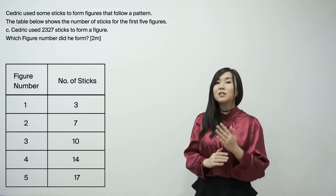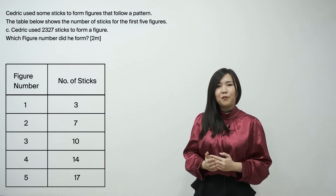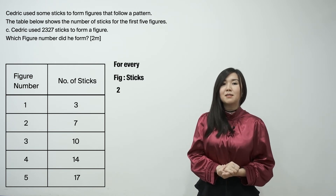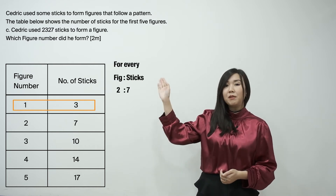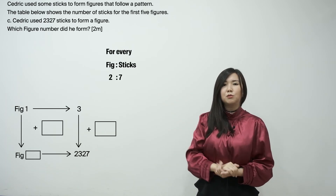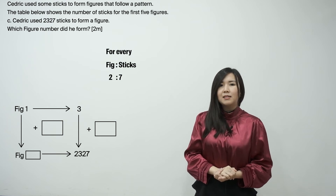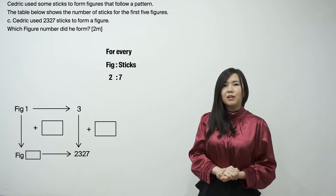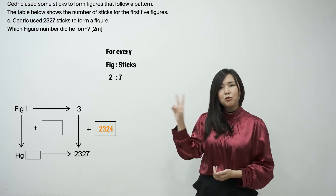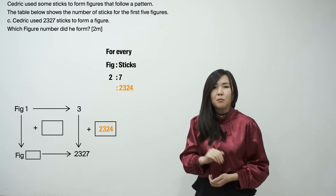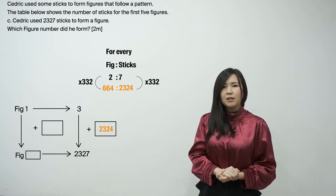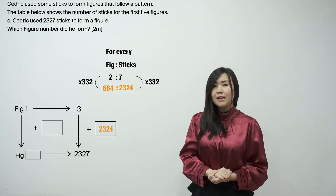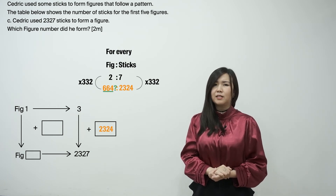Moving to part C — since this question is a constant difference at alternate intervals question type, for every two more figures, the number of sticks increases by 7. Let's try using figure 1 as base. Figure 1 has 3 sticks. So how many more sticks to reach 2327 sticks? Cedric would need 2324 more sticks. Since every two more figures equals 7 more sticks, 2324 more sticks would give us 664 more figures.